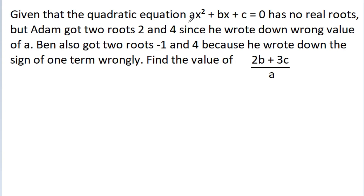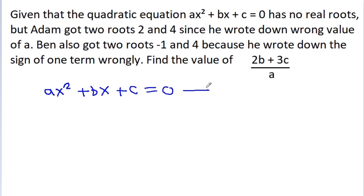We have given that the quadratic equation ax²-bx-c=0 has no real root. But Adam got two roots, 2 and 4, since he wrote down the wrong value of a. Ben also got two roots, -1 and 4, because he wrote down the sign of one term wrongly. Then we have to find the value of (2b-3c)/a. The given equation ax²-bx-c=0 has no real root, that means b²-4ac should be negative.